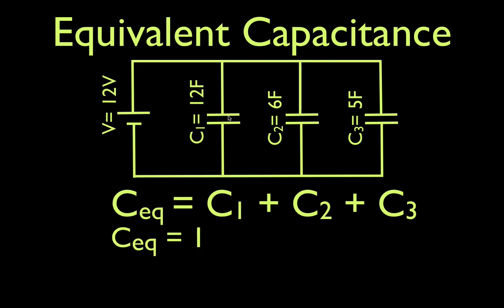So the way that it works is you just add up the capacitance, and if you add up to get the equivalent capacitance, you get 12 plus 6 farads plus 5 farads, and therefore you get that the equivalent capacitance of this circuit is 23 farads. You just add up the capacitance of each of the capacitors. That's all there is to it. That is equivalent capacitance for capacitors in parallel.